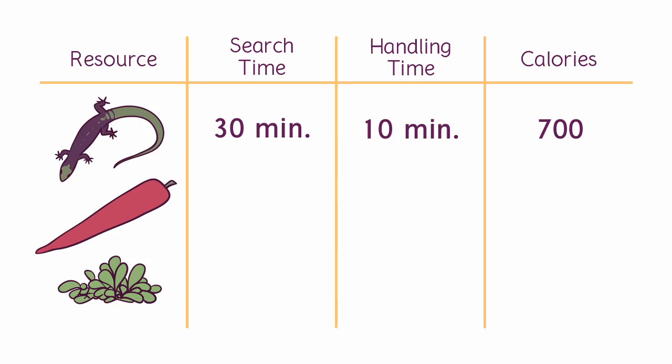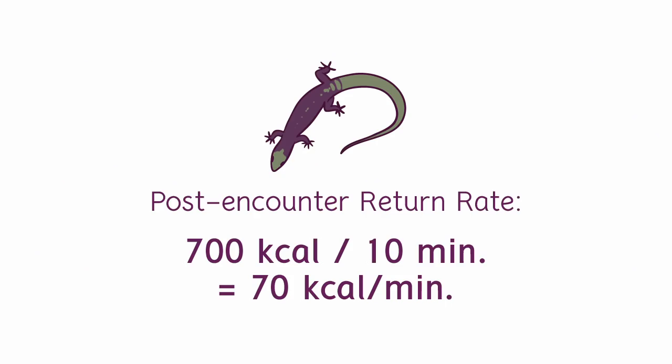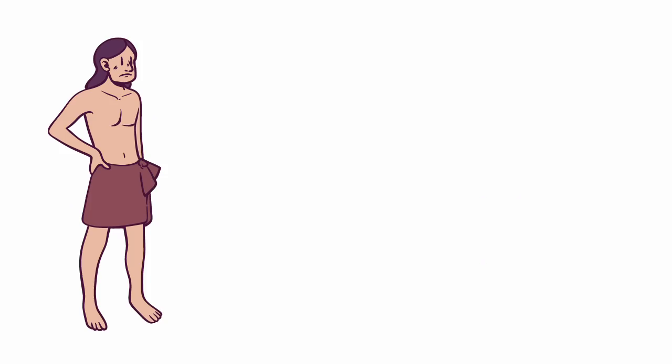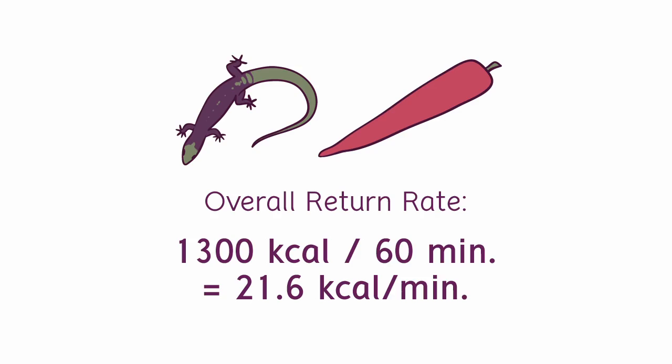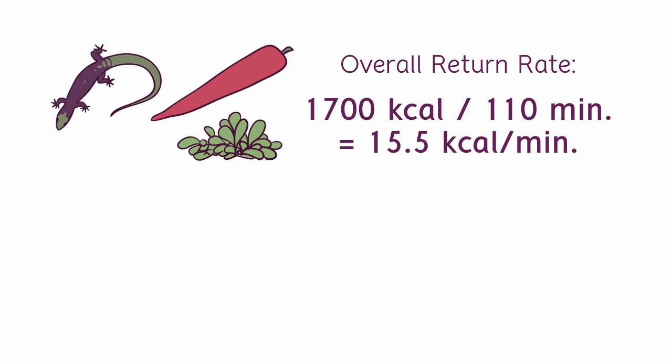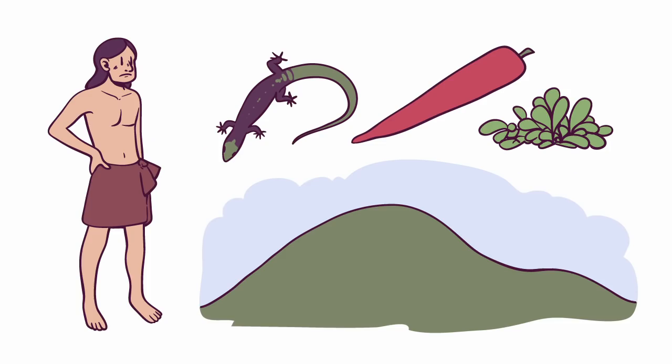Large tubers take 20 minutes to find, 20 minutes to dig up, and provide around 600 calories. The edible herbs take 10 minutes to find, 40 minutes to harvest a basketful, and that basketful amounts to 400 calories total. Lizards have the best post-encounter return rate of the three — 10 minutes of handling time earns 700 calories, which is 70 calories per minute. If our forager harvests only lizards, his overall return rate (with search time included) is 17.5 calories per minute. Adding tubers brings it up to 21.6 calories per minute. But harvesting the herbs is simply not worth it — their post-encounter rate is only 10 calories per minute, and the overall return rate with the herbs is lower than without them. He would have wasted his time harvesting herbs when he could have spent it harvesting more tubers and lizards.